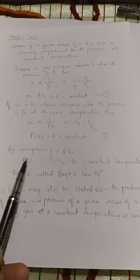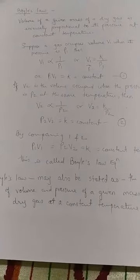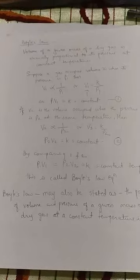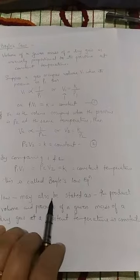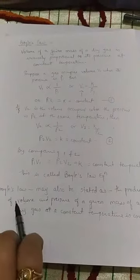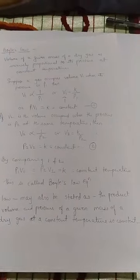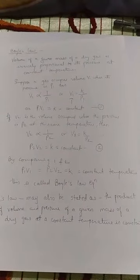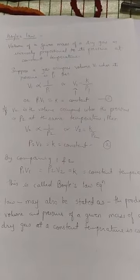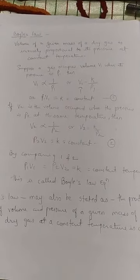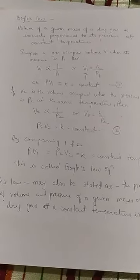This equation P1V1 = P2V2 is known as Boyle's Law equation. Many times in the exam, the Boyle's Law statement is also asked. The statement is: the product of volume and pressure of a given mass of a dry gas remains constant at constant temperature, meaning volume is inversely proportional to pressure.